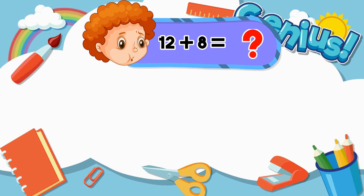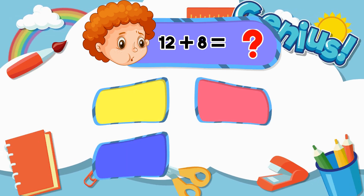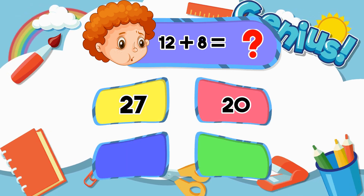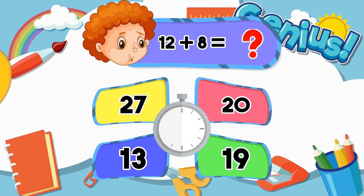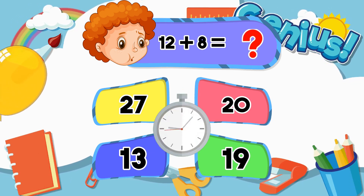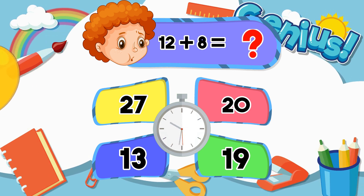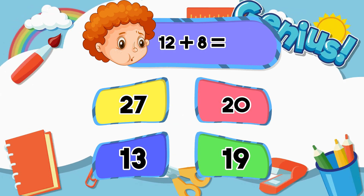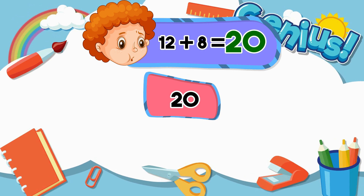What is twelve plus eight? Twenty-seven. Twenty-three. Nineteen. Twenty.